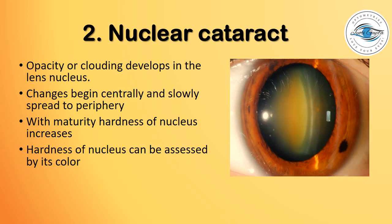Nuclear cataracts are a type of cataract where opacity or clouding develops in the lens nucleus. The opacity begins centrally and slowly spreads to the periphery. With maturity, the hardness of the nucleus increases, and this hardness can be assessed by its color.